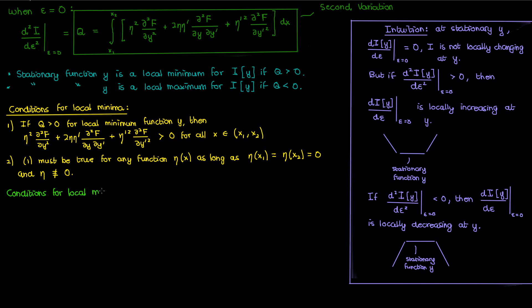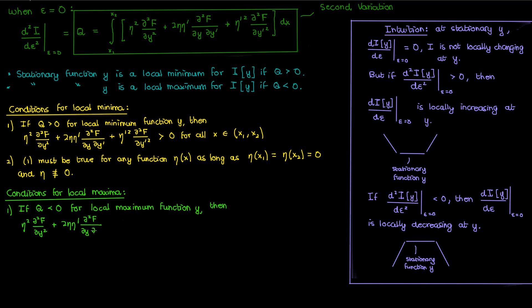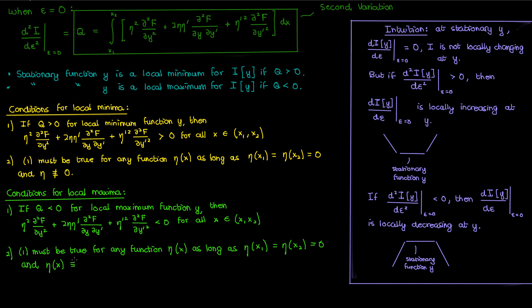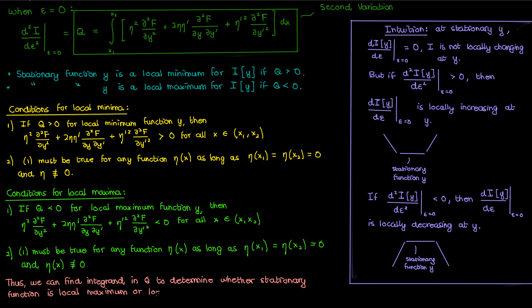Similarly for local maxima, in order to guarantee that our second variation integral must be negative, we propose the condition that our integrand must be negative for all x within the limits of integration. This must also be true for all non-trivial functions η that satisfy the boundary conditions. So once we find the integrand in our second variation and demonstrate that it is either always positive or always negative for our integration limits given any arbitrary η satisfying the conditions, we know that our stationary function is either a local minimum or a local maximum.